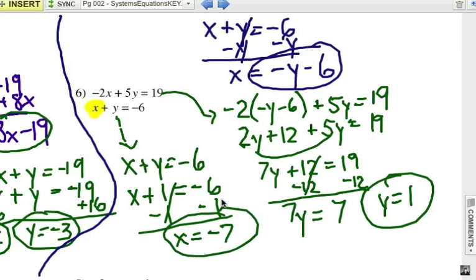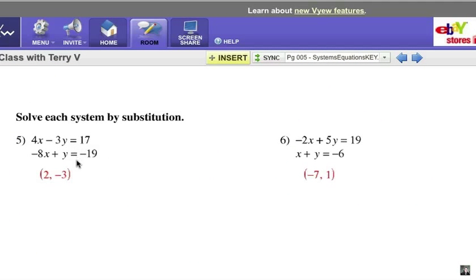All right. Now my answer key - notice how the answer is written. It's written as an ordered pair. I've got number 5: x was positive 2 and y was -3, so I write it as this ordered pair (2, -3). And number 6: I had x is -7, y is 1, and I write it as that ordered pair. That's where the lines of these two equation graphs would meet. Thanks for watching this video. The next one is elimination method, which is a lot less writing and I think you'll like it.